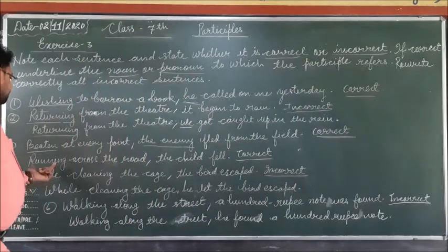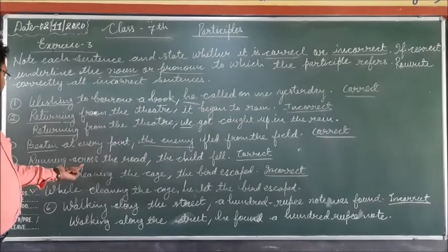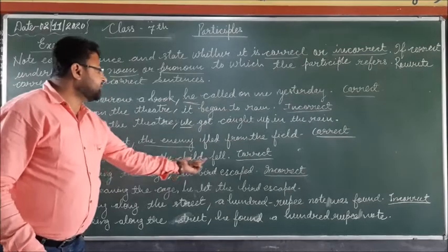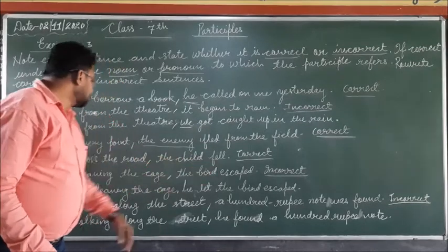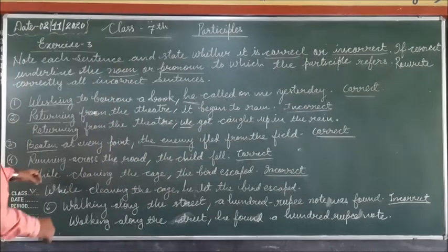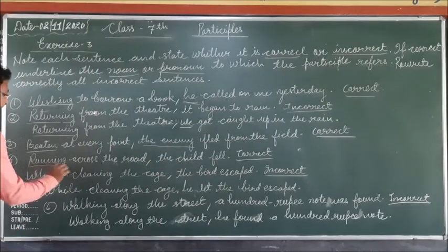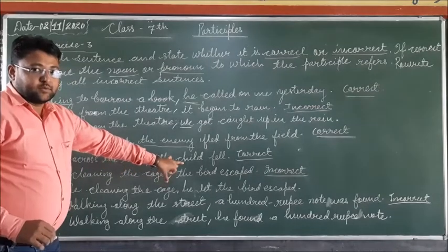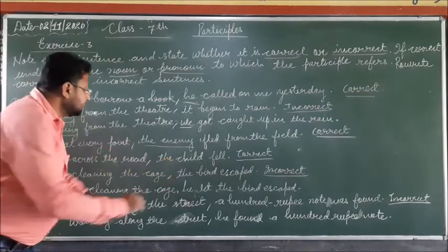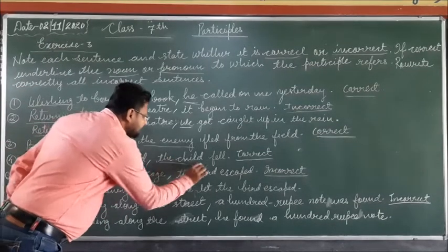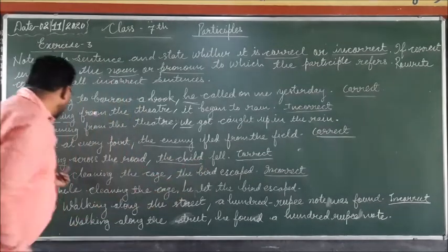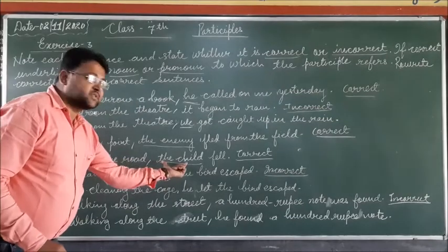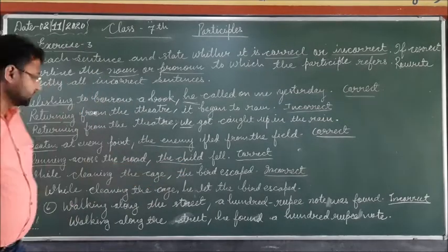Next sentence: 'Running across the road, the child fell.' Here 'running' is the participle, and 'the child' is the noun to which this participle refers. So this is a correct sentence — the participle clearly refers to 'the child.'